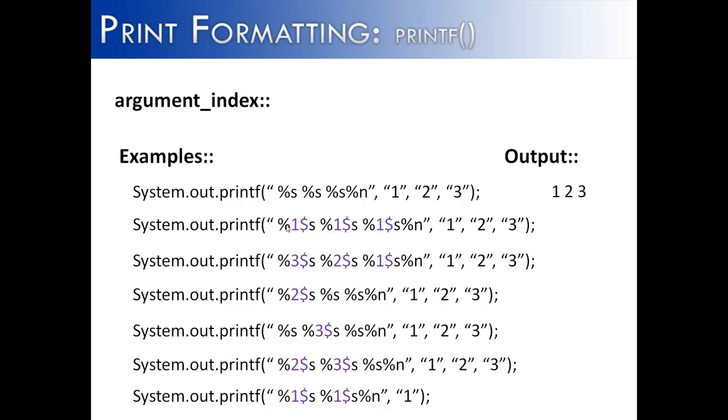In this next example, I'm going to show the output using an argument index. An argument index starts with an index number and then the dollar sign. So we can see that the first argument is going to be a 1 over here. And you can probably guess, because I've used 1 dollar sign, 1 dollar sign here, what's going to print out.